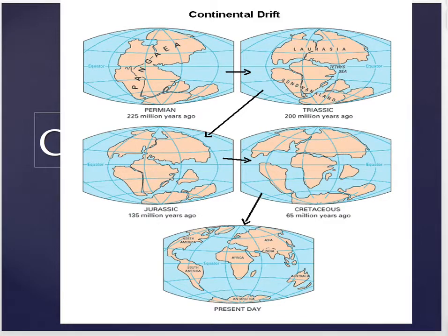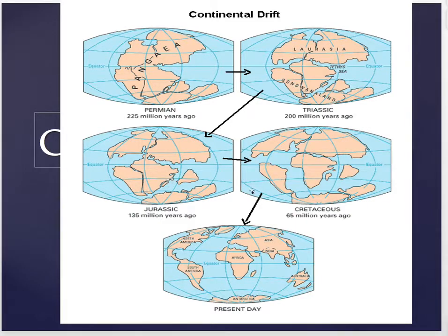This piece of land here, as you can see by where the cursor is, is what will become the Indian subcontinent. You can see progressively from 225 million years ago, right through 135 million years ago — the Jurassic period — 65 million years ago when dinosaurs essentially went extinct. You can see that it is breaking off as a function of plate tectonics.